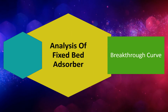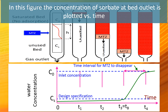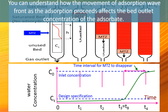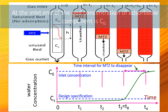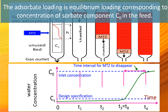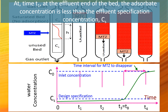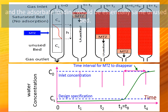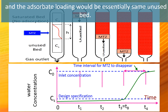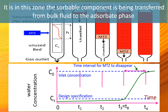Breakthrough curve. In this figure, the concentration of sorbate at bed outlet is plotted versus time. You can understand how the movement of the adsorption wave front as the adsorption proceeds affects the bed concentration of the adsorbate. At the inlet end of the bed, the concentration of the adsorbable component is C0. The adsorbate loading is the equilibrium loading corresponding to concentration of the sorbate component C0 in the feed. At time T1, at the effluent end of the bed, the sorbate concentration is less than the effluent specification concentration Cs, and the sorbate loading would be essentially the same as the unused bed. In some intermediate zone, the adsorbate loading changes from saturation value to the initial adsorbate loading. It is in this zone that the sorbable component is being transferred from bulk fluid to the sorbate phase, and the concentration falls from C0 to Cs.